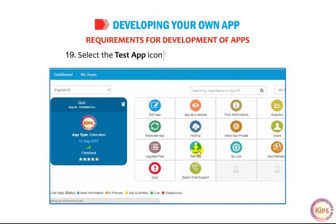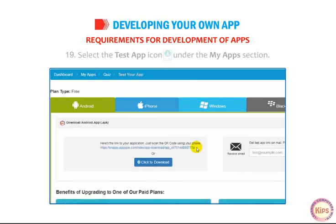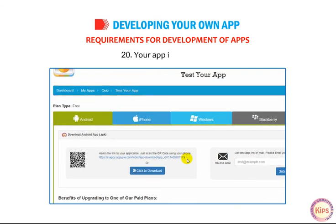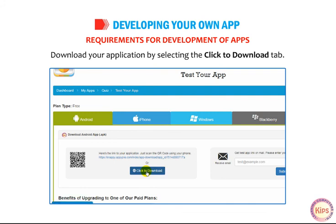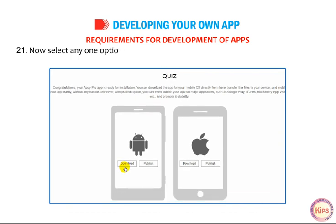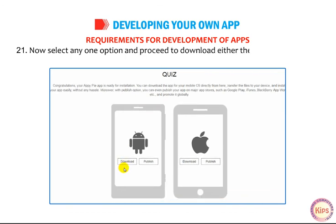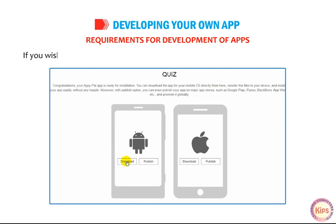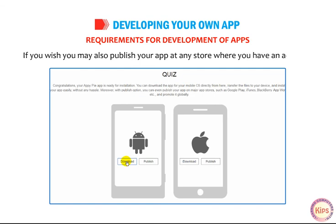Select the Test App icon under the My Apps section. Your app is now ready. Download your application by selecting the Click to Download tab. Select any one option and proceed to download either the Android or the iOS version of your app. If you wish, you may also publish your app at any store where you have an account.